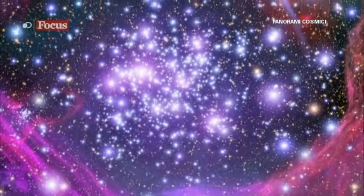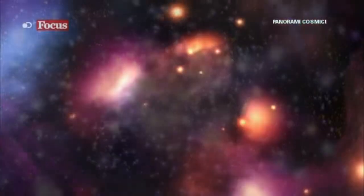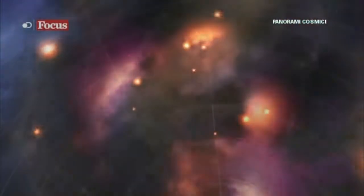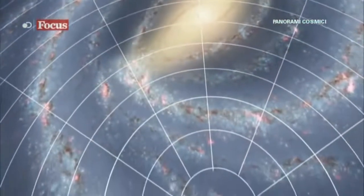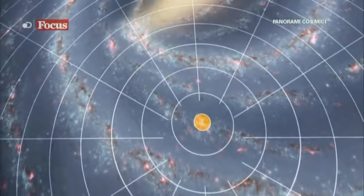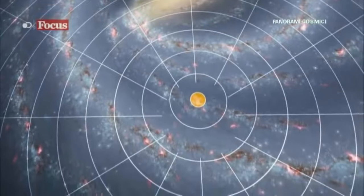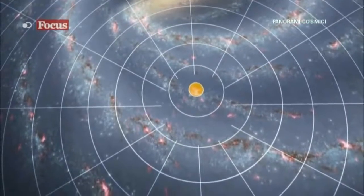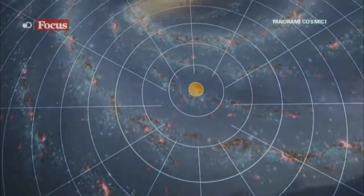Visioni spettacolari come la nebulosa Trifida rendono questa parte del cielo un paradiso per gli occhi. Più vicino a noi gli astronomi hanno determinato che il nostro sistema solare fa parte del braccio di Orione, una struttura più piccola che potrebbe essere una diramazione del braccio del Sagittario.